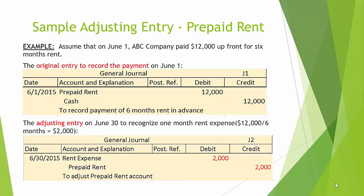Here is a sample adjusting entry for prepaid rent. Assume that on June 1, ABC Company paid $12,000 upfront for six months rent. The original entry to record the payment on June 1 debited prepaid rent $12,000 and credited cash $12,000. The adjusting entry on June 30th to recognize one month's rent expense is calculated by taking $12,000 divided by 6 months, which equals $2,000. Therefore, the adjusting entry on June 30th would debit rent expense $2,000 and credit prepaid rent $2,000.